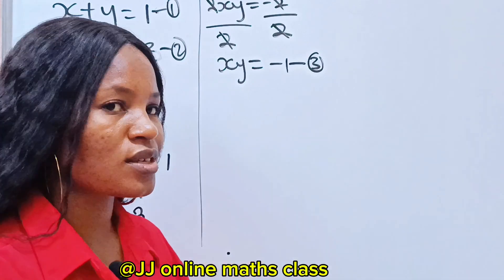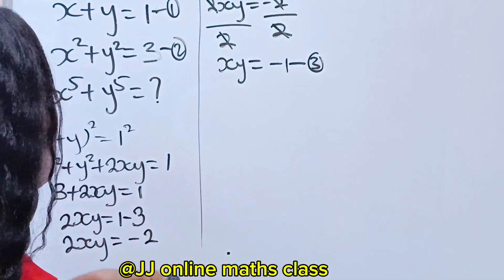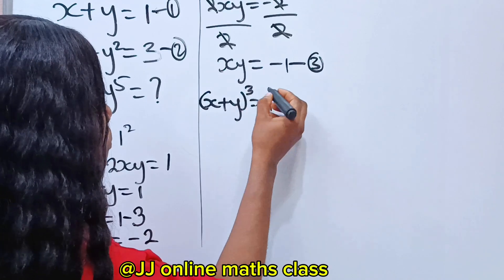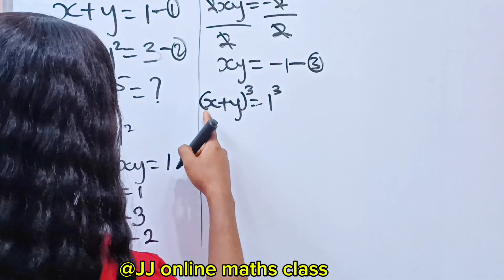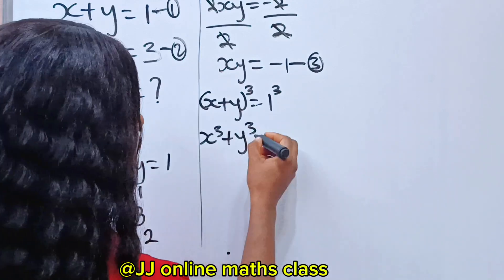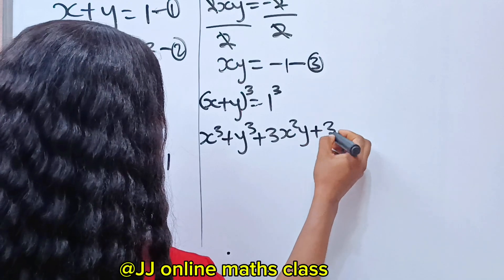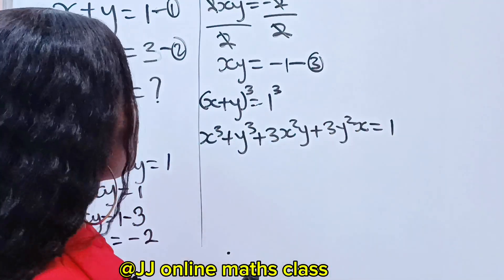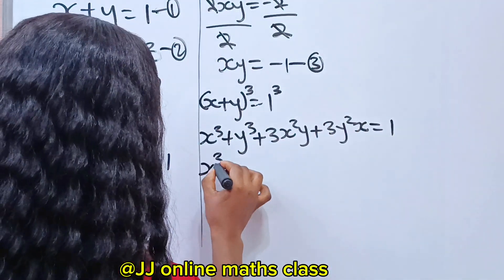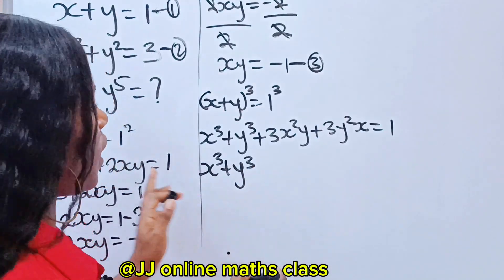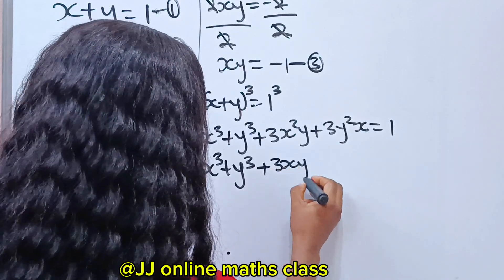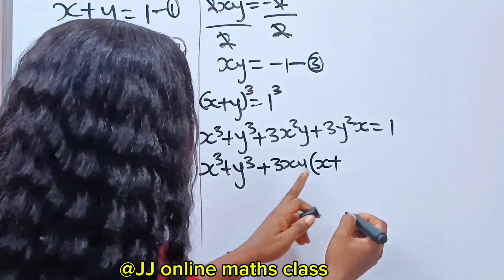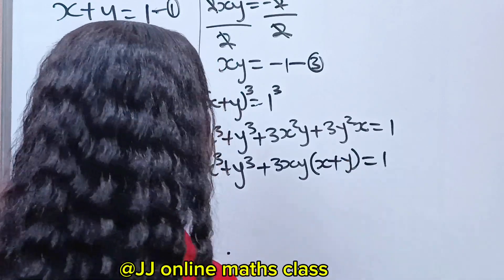Our intention is to get x to the power of 3, and to do that we have to cube equation 1 as well. So x plus y is equal to 1, and if we cube both sides, we are going to have x to the power of 3 plus y to the power of 3 plus 3x squared y plus 3y squared x is equal to 1. Now, 3x squared y plus 3y squared x has 3xy in common. When 3x squared y is divided by 3xy, we are left with x, and when 3y squared x is divided by 3xy, we are left with y.